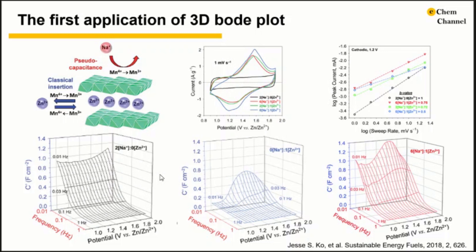In a 3D Bode plot, the relation between the potential, frequency, and capacitance are monitored at the same time. With only sodium present in the electrolyte, the 3D Bode plot appears as a single waterfall. The potential independent capacitance gently falling off as frequency increases.